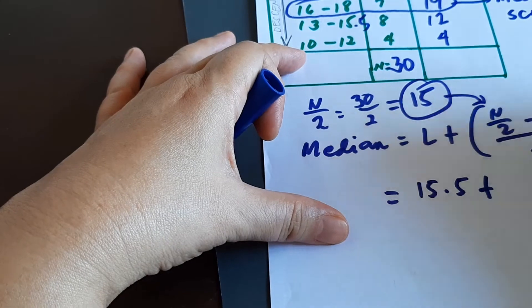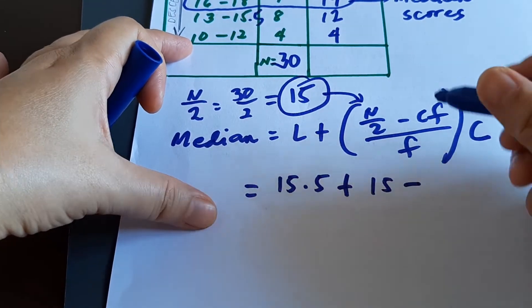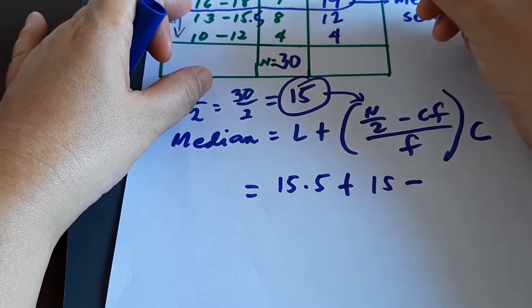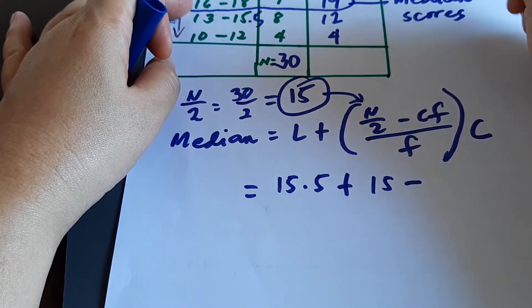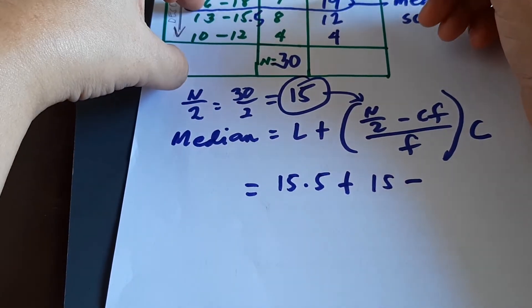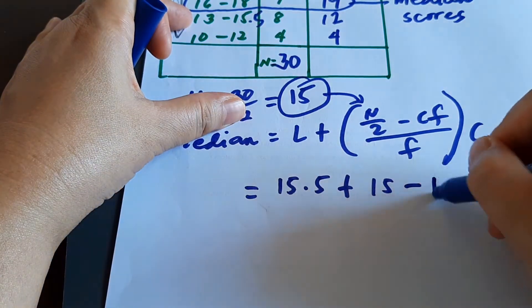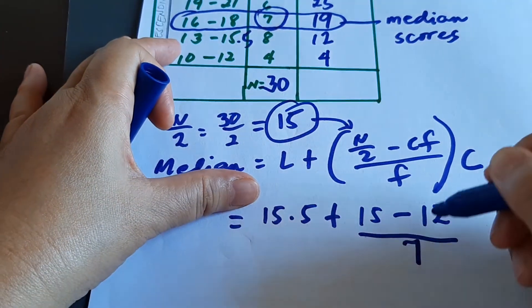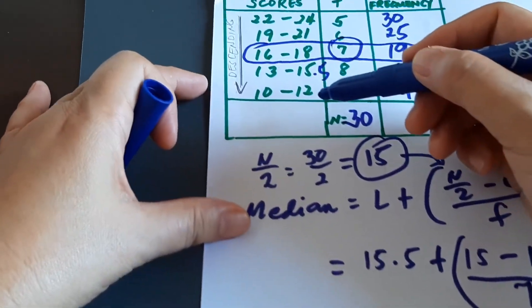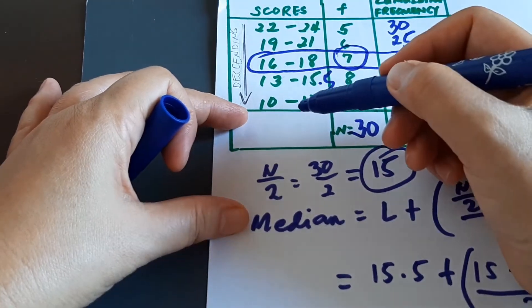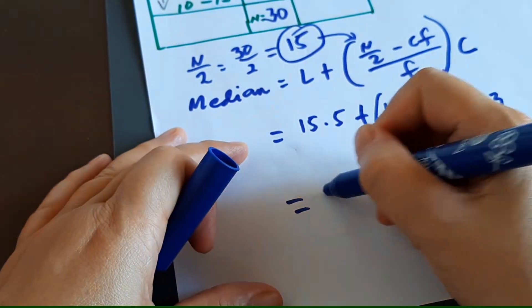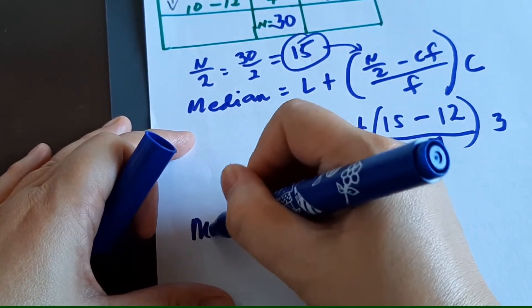The cf is the cumulative frequency of the class before the median class, which is 12. The frequency f of the median class is 7. The class interval c is 3 (since 12 − 10 + 1 = 3). So the calculation gives us: 15.5 + ((15 − 12) / 7) × 3 = 16.79. Our median is 16.79.